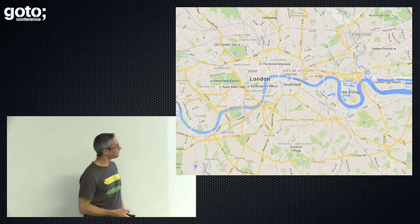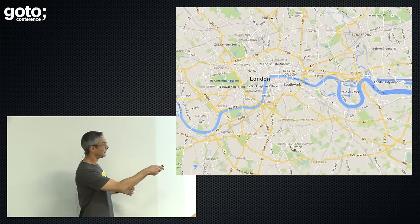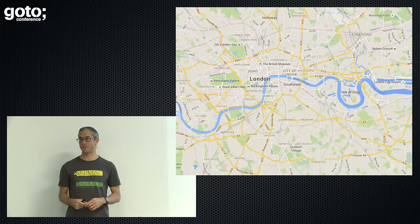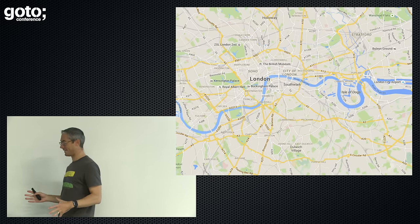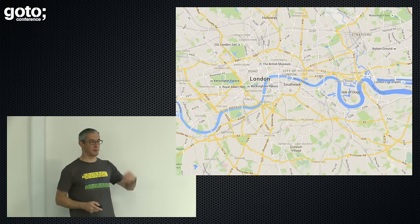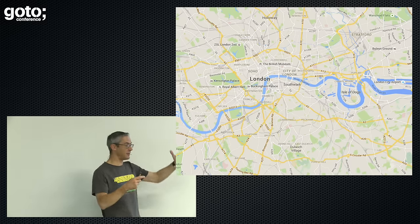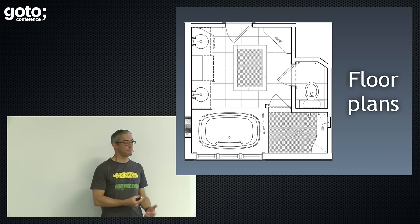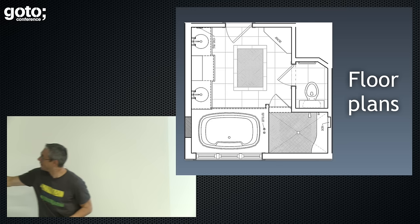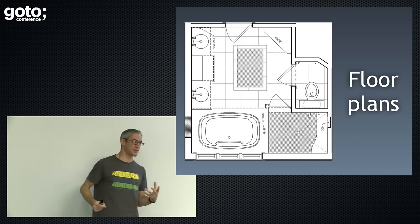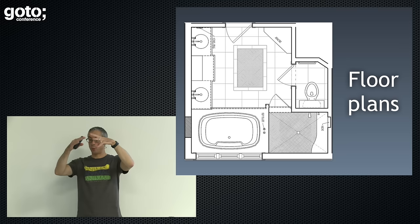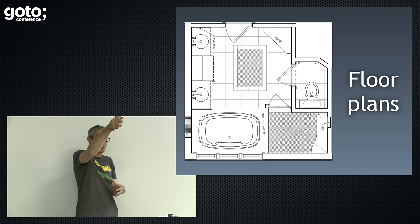Quiz time. What's this? It's a map of London. What's the blue thing? It's a river — the River Thames. What is a river? A body of water flowing one direction or another. We know what a river is, and we can go and find other rivers using that knowledge. What's that? A floor plan for a bathroom. What's this thing here? It's a toilet. You know what a toilet is, and you could use that knowledge to go and find more toilets.